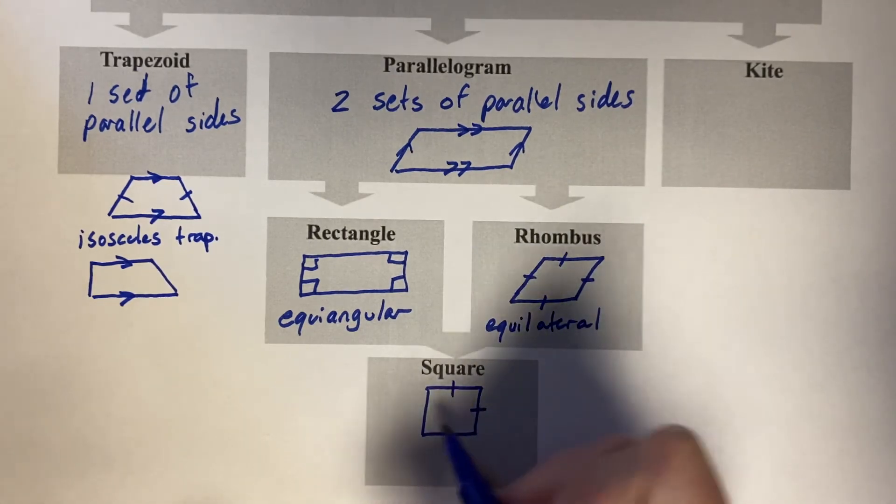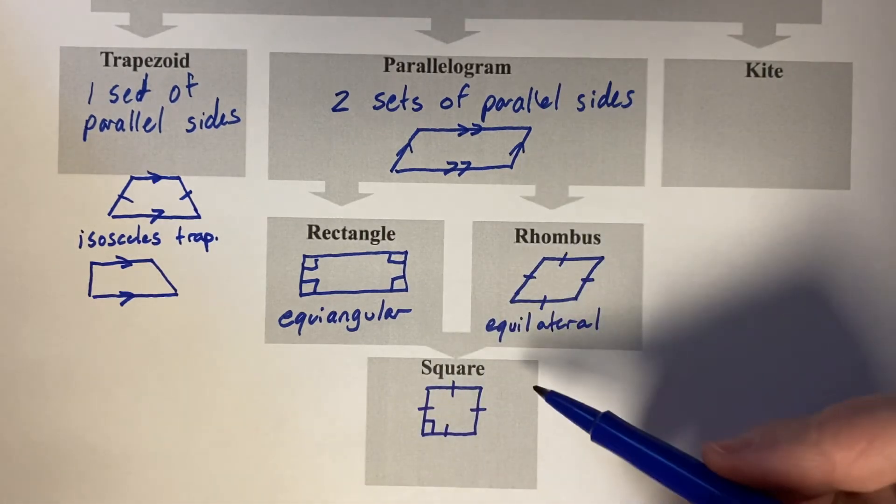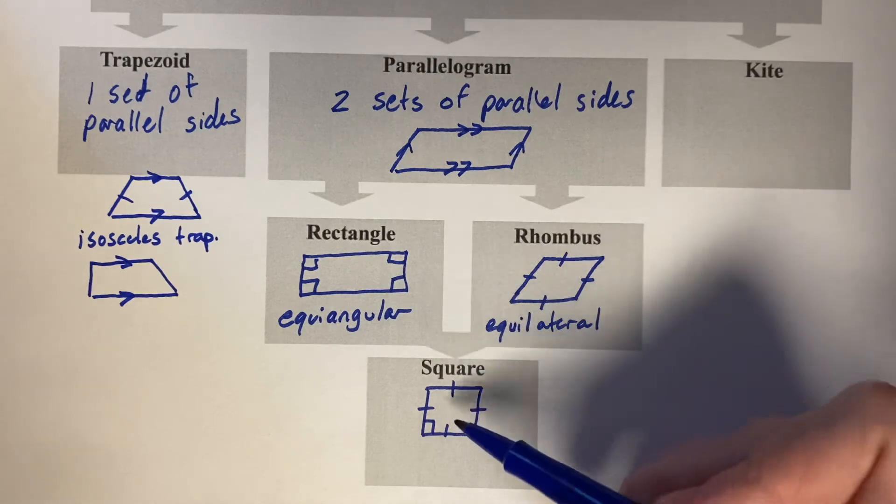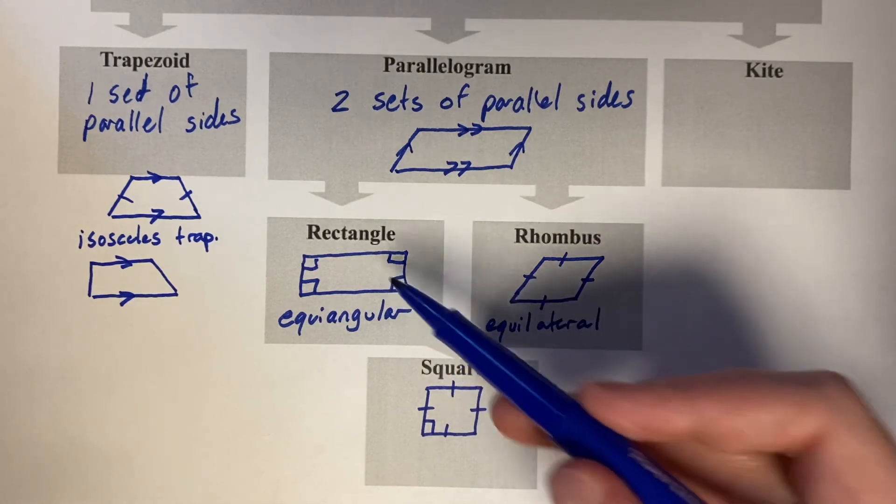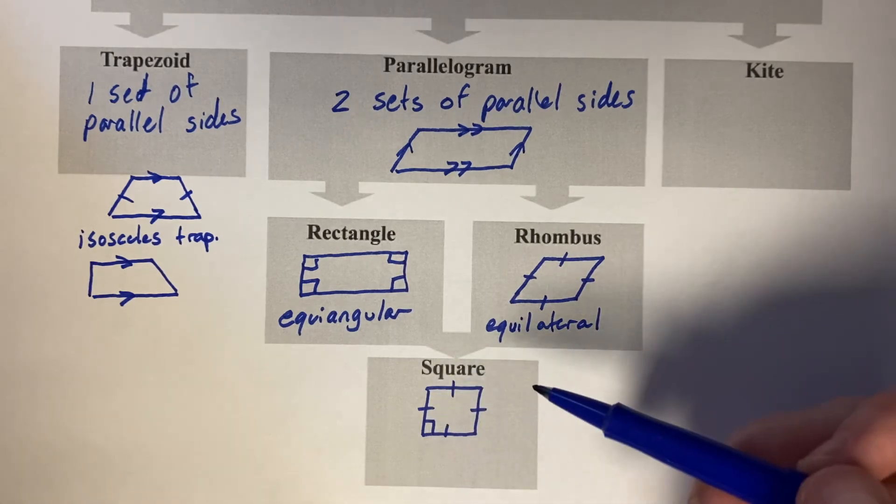Our favorite friend. It would be the most specific parallelogram that you can create. So a square is a rectangle and a square is a rhombus, but it's got both features, which is why we call it a square.